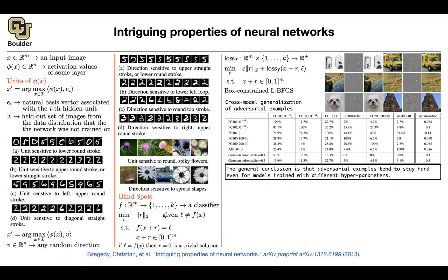So the general conclusion was that adversarial examples tend to stay hard, even for models trained with different hyperparameters. And these are our hyperparameters: the weight decay and different structures, depth and width of your networks.